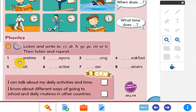One, grandma. Two, crayons. Three, strong. Four, breakfast. Five, fruit. Six, practice. Seven, draw. Eight, trainers.